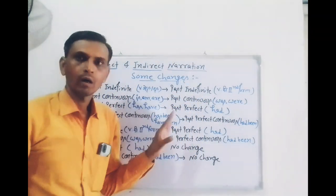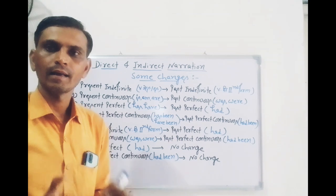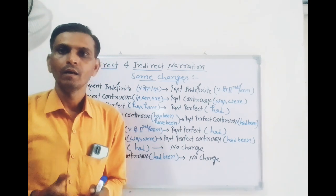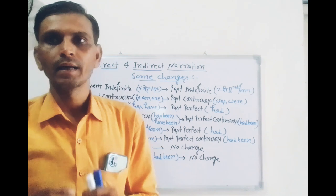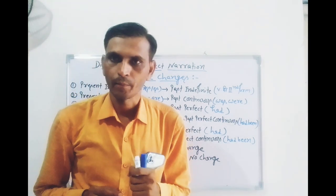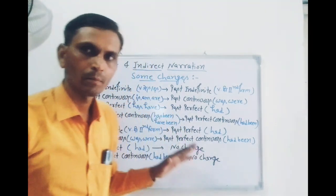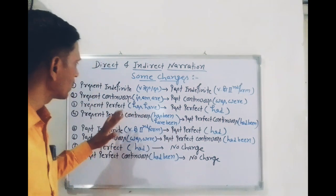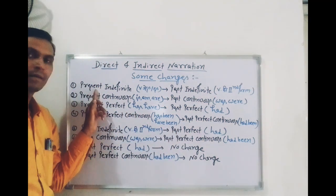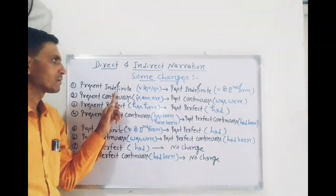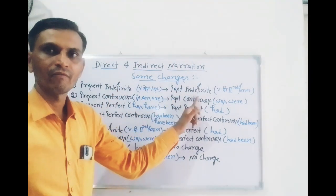दोस्तों, आप सभी को पता है कि Direct से Indirect Narration बनाते समय, आठ tense ऐसे होते हैं जिनकी Direct से Indirect बनाते हैं। जो आठ tenses हैं, वो आपके सामने बोर्ड पर लिखे हुए हैं। पहला tense है Present Indefinite — change होता है Past Indefinite में।